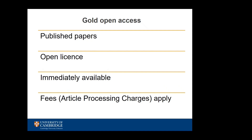Gold open access is a publishing model that charges to publish. Some journals are fully open access, which means that all of their content is open access. Other journals are subscription journals that offer researchers the option to pay to make their paper open access, and these are called hybrid journals. Unless the publisher has waived the fee, there will be an invoice to pay. Researchers should consider how they will pay the fee before agreeing to pay to publish gold open access.